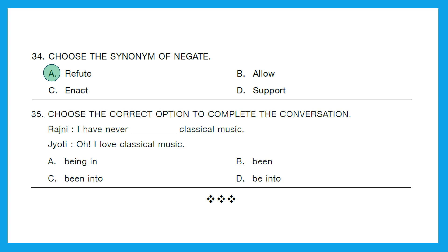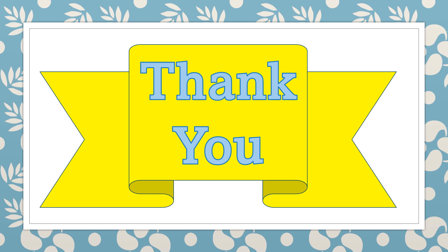Question 35: Choose the correct option to complete the conversation. Rajini: 'I have never dash classical music.' Jyoti: 'Oh, I love classical music.' Options are: been in classical music, been classical music, been into classical music. The right option is option C: 'I have never been into classical music.' 'Been into' means to be interested in something. With this we have successfully solved the Class 4 International English Olympiad previous year question paper. I hope these videos are helping you in your Olympiad preparation. Keep watching, keep solving until you get all the answers correct. Thank you and happy learning! Stay tuned to Kids Laugh and Learn channel.